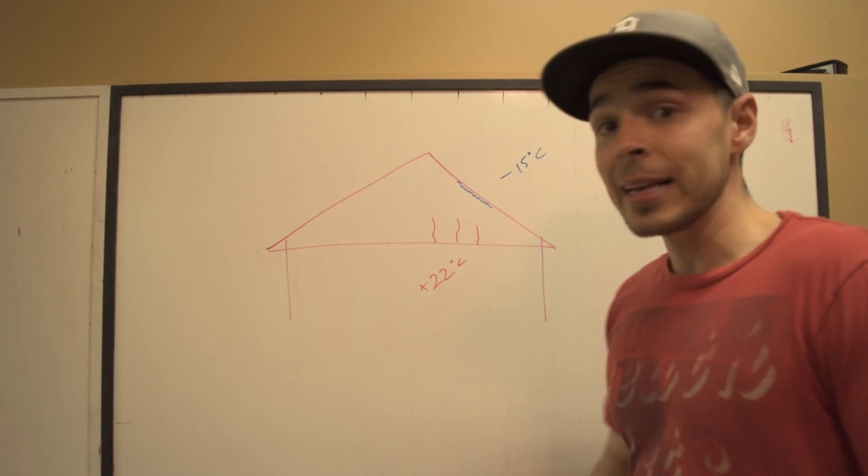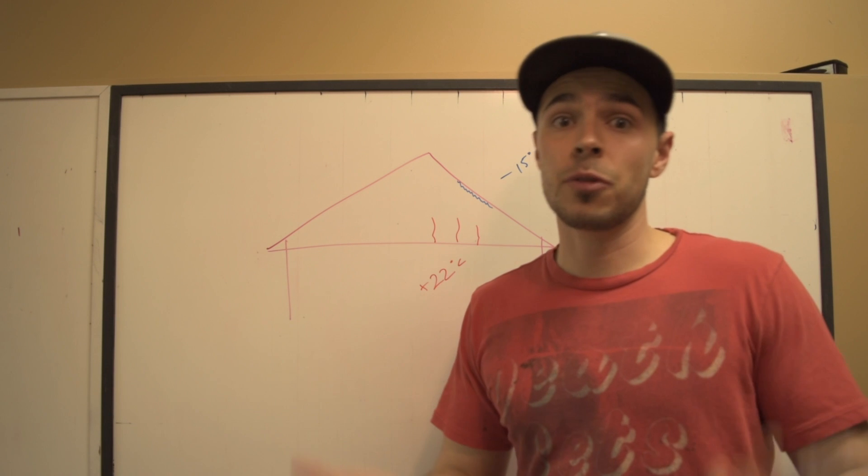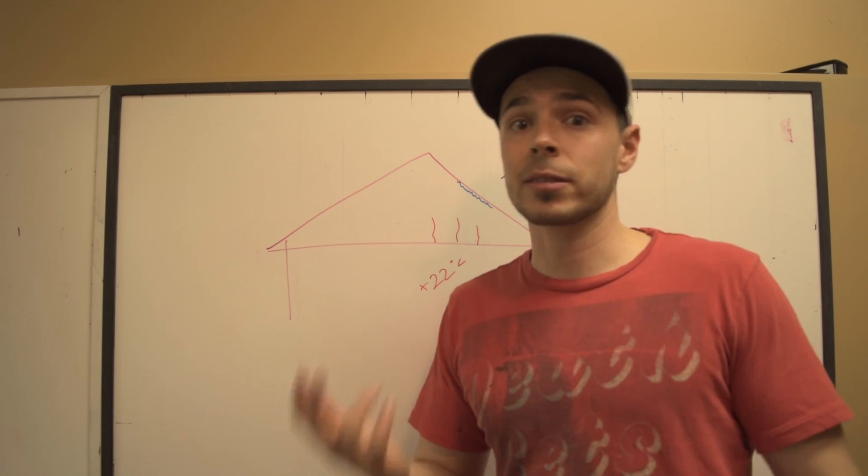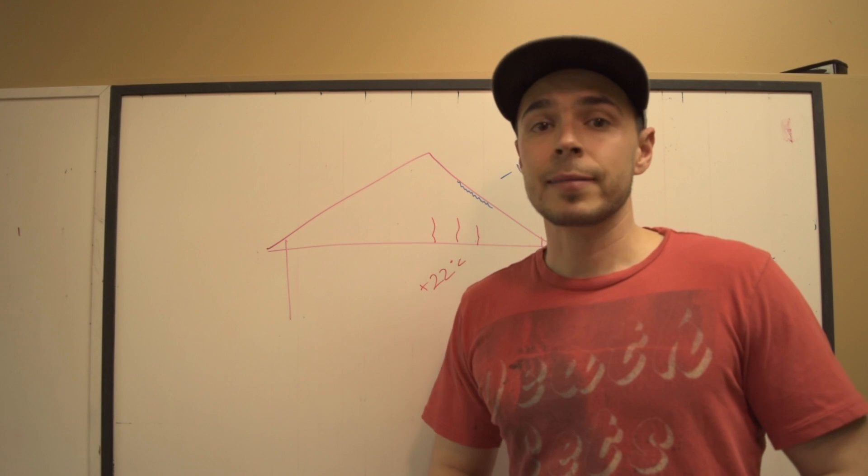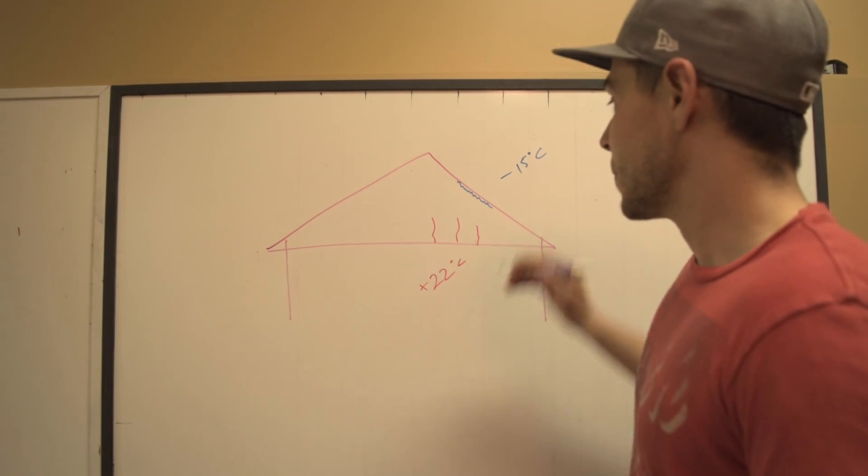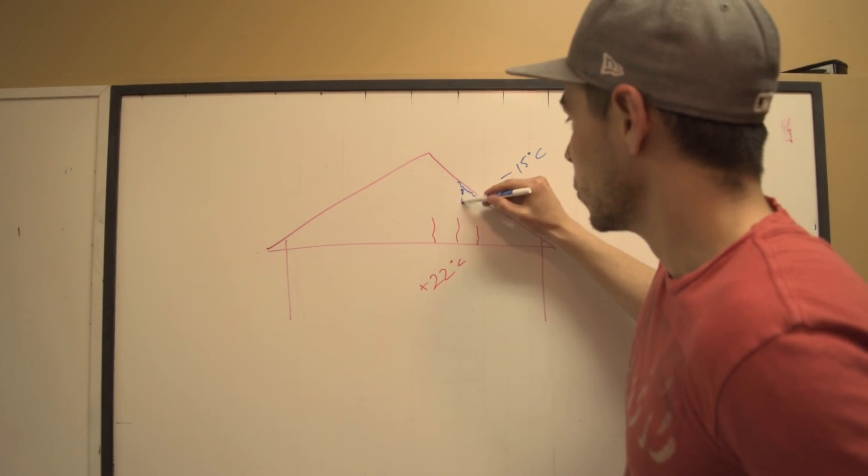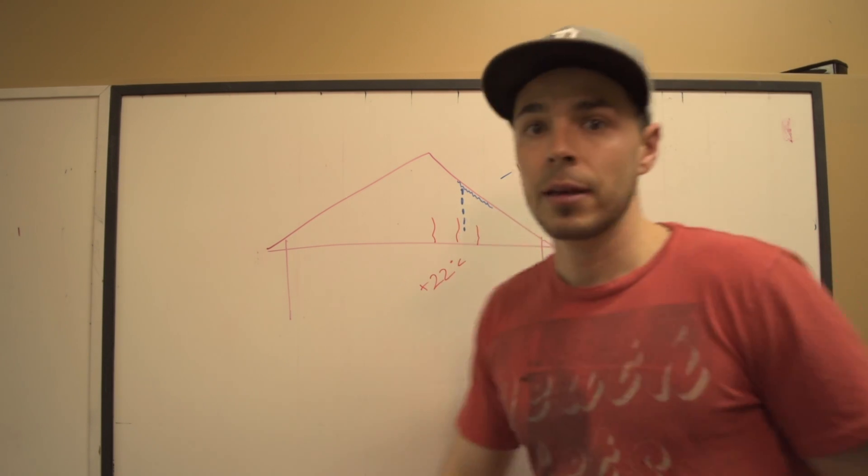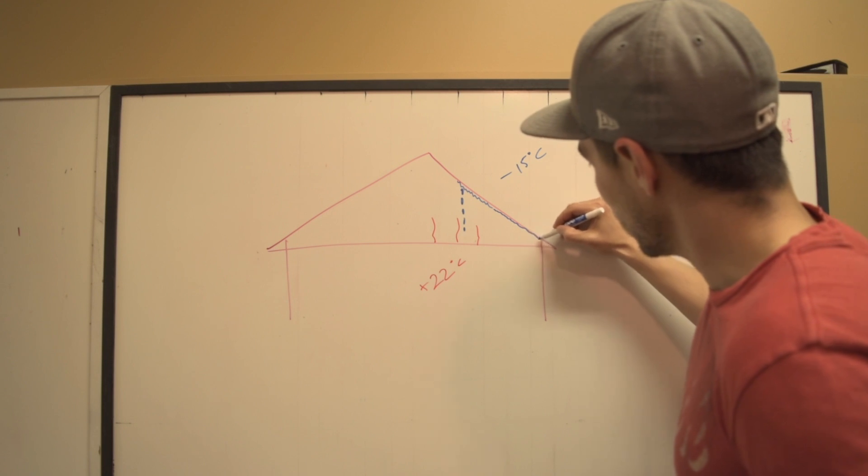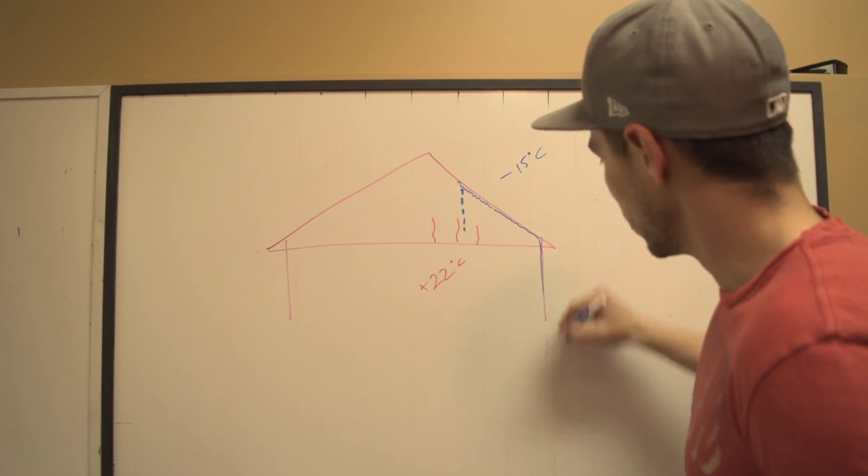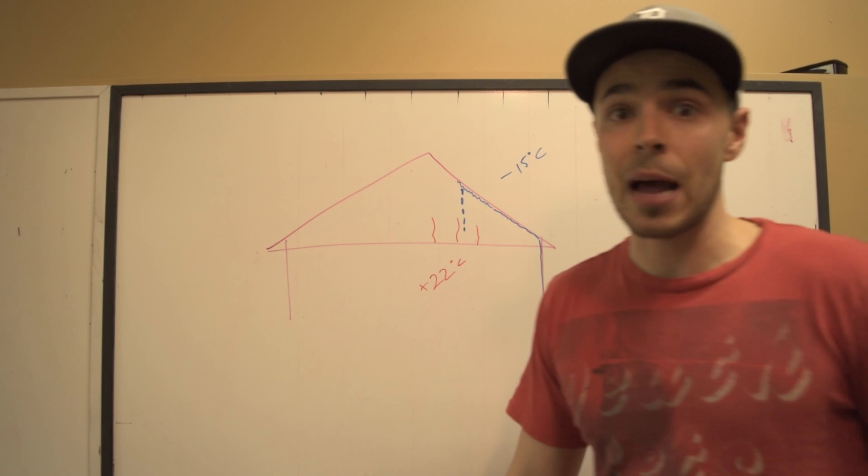And what happens is when we have those freeze and thaw cycles in Calgary, especially through the Chinooks, it starts to rain inside your attic space and can also trickle down all the way down the wall. We've seen that happen before.